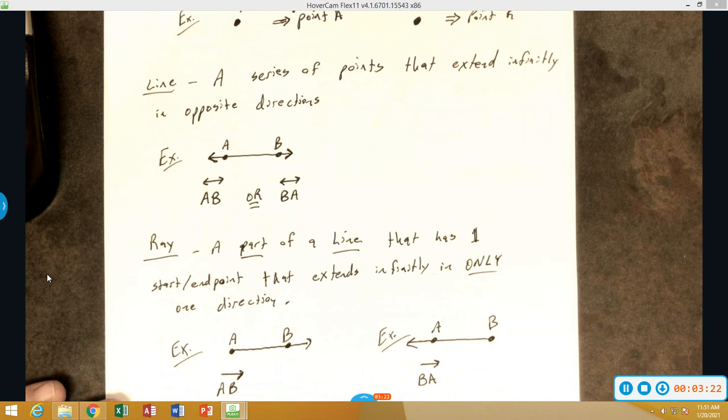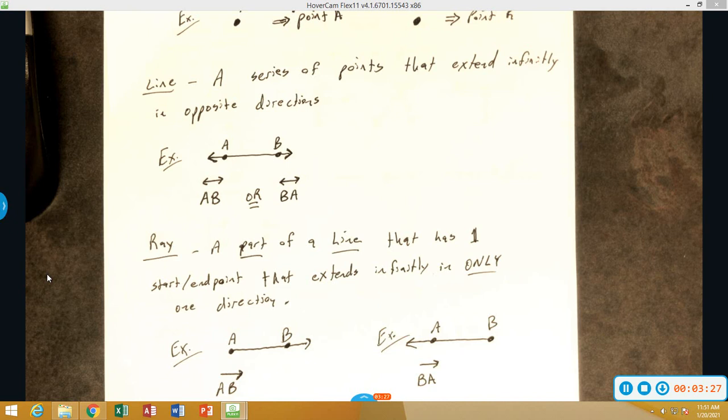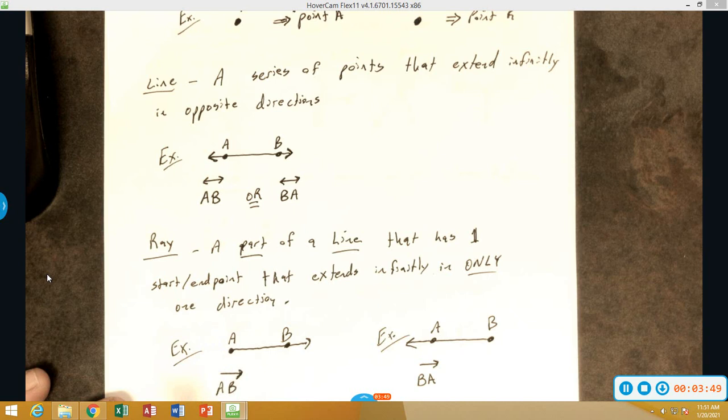Next, we have a ray. Rays are just a part of a line in which you will have one starting point or endpoint. I like to think of it as a starting point. That one point is going to extend infinitely in only one direction. For example here, we're starting at A going through B and we never turn back. This would be ray AB. Notice I don't have an or here to name it something else. If we wanted to have ray BA, we would actually have to turn this around and go from B going through A.